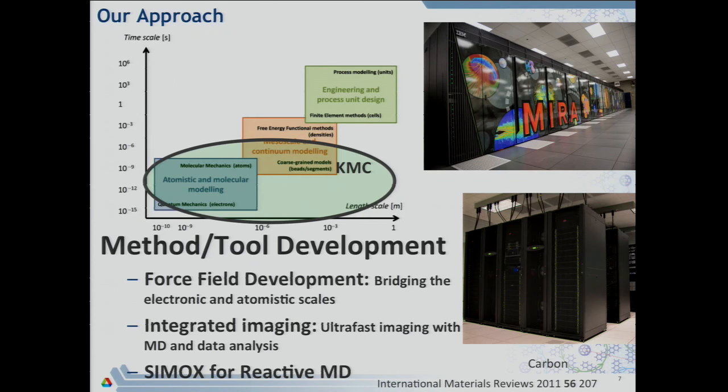Coherent X-ray diffraction is a technique to look at lattice strains in microcrystals. There are several similarities between CDI and molecular dynamics, and the information you can get are complementary. The two can be used to push resolution down to nanometer. Currently, CDI can go down to about 10 nanometers, but a combination of MD and CDI can allow us to look at one nanometer or sub-nanometer resolution. We have an integrated imaging LDRD trying to combine ultra-fast imaging with MD and data analysis.